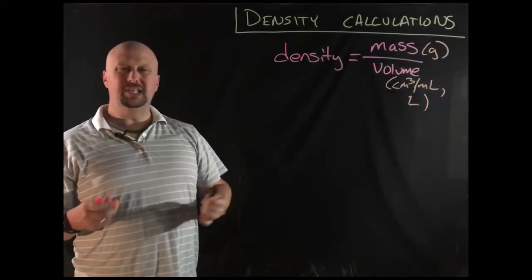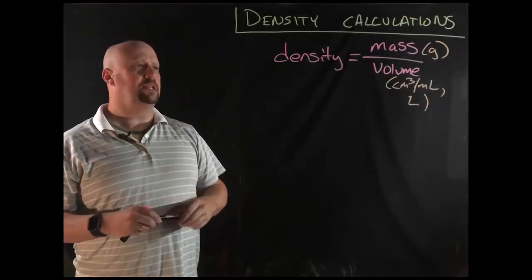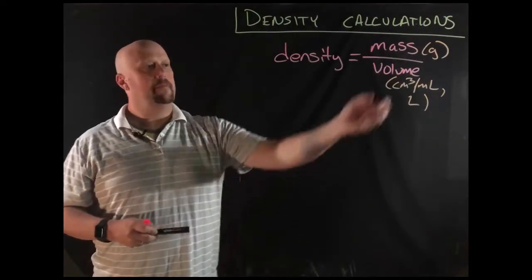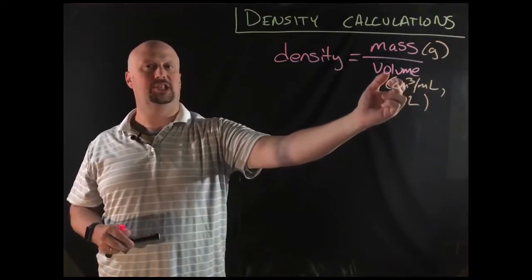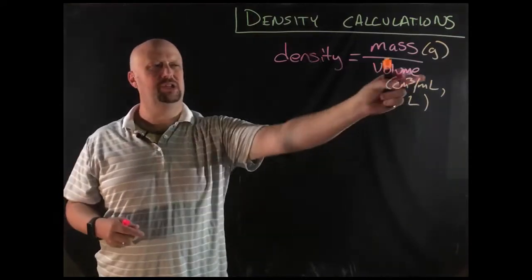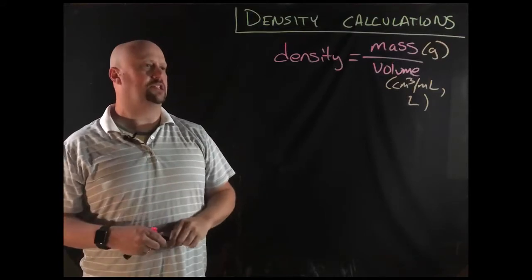Liters tends to only get used for density when it's a gas or something like that. Typically speaking, if it's a solid, we're probably just going to use grams per cubic centimeter. Again, if we were getting real technical, usually if it's a liquid, we want to use milliliters. If it's a solid, then we want to use cubic centimeters if we're doing density. But those two things are relatively interconvertible. And if you know they're the same, I don't think you're going to miss any test questions on that.